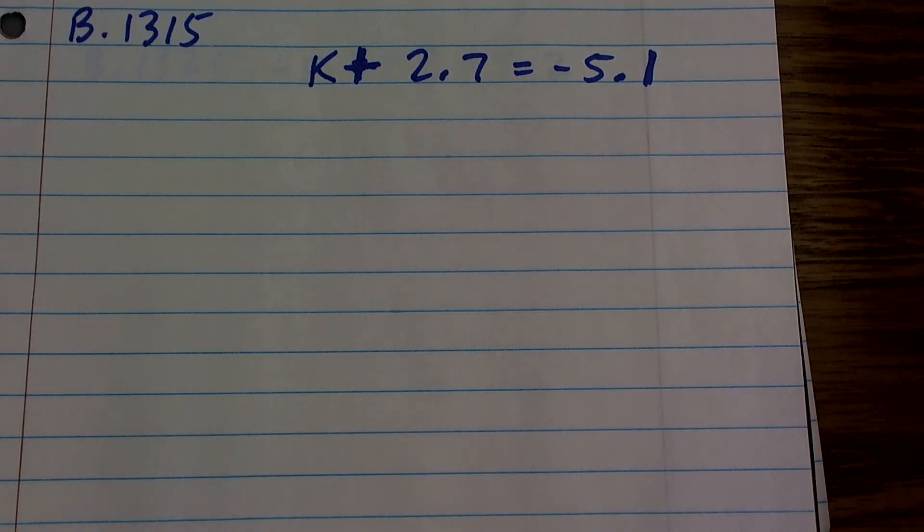All right, here's a little problem. Here we have k plus 2.7 equals negative 5.1.